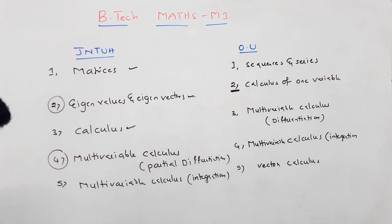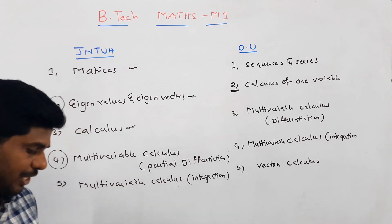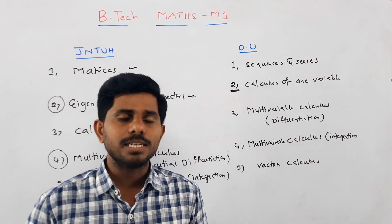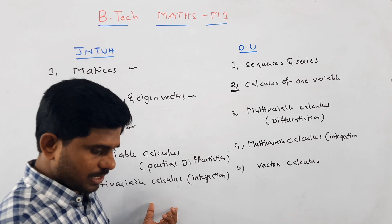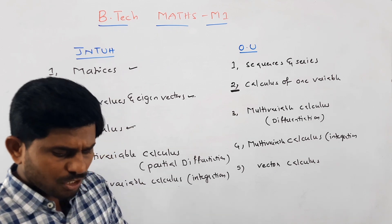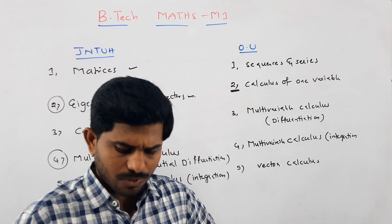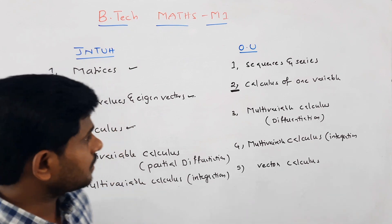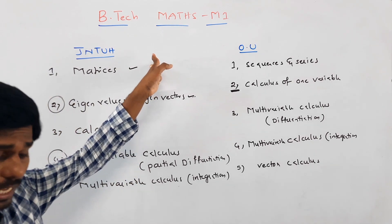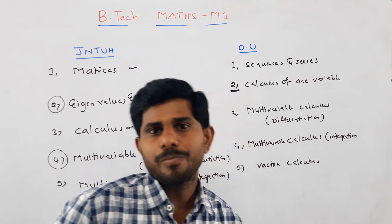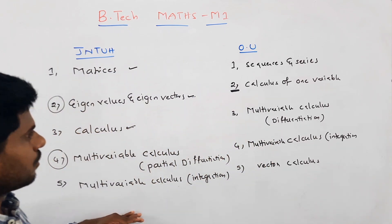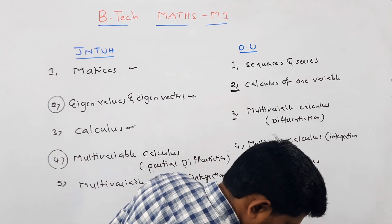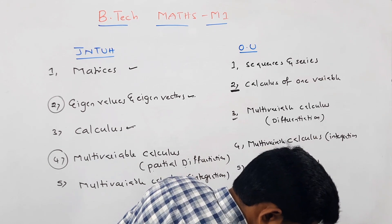Next, multivariable calculus — this covers total integration topics. In intermediate you only applied single integration; here you apply double integration. Topics include evaluation of double integration in Cartesian and polar coordinates, change of order of integration, evaluation of triple integration, and related integration topics. Many of you have books like B.S. Grewal's Higher Engineering Mathematics — that covers the total syllabus. Multivariable calculus includes both partial differentiation and integration.